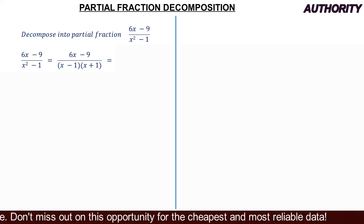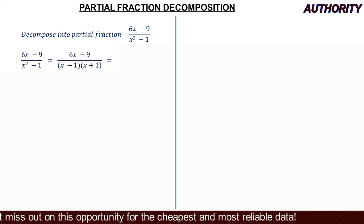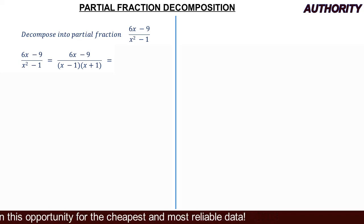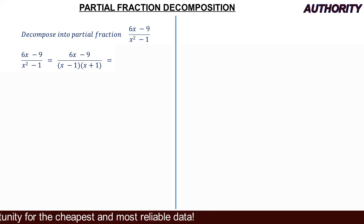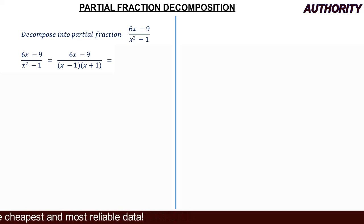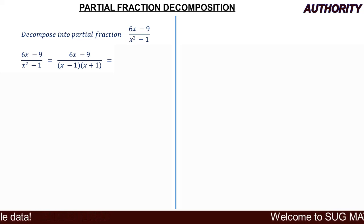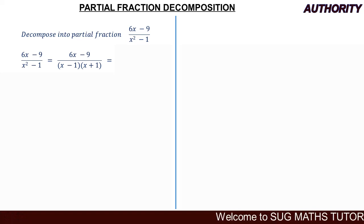Now we have (6x - 9) all over (x - 1)(x + 1). We are going to assign constants A and B to each of these factors. A, B, C as the case may be — these letters represent the values we are looking to obtain.